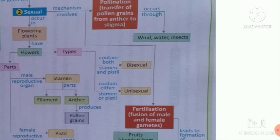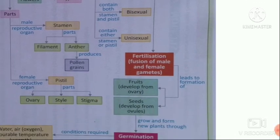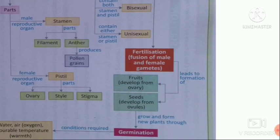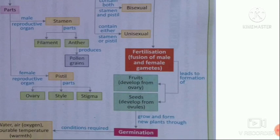After pollination, when the male gametes have reached the stigma via pollen grains, they germinate and form a pollen tube. Through this pollen tube, male gametes travel and reach the ovules. The pollen tube bursts and the male and female gametes fuse. This fusion of male and female gametes is called fertilization.